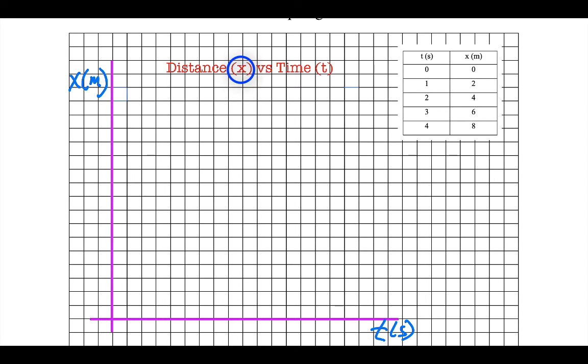Now, notice I have distance and, in parentheses, x, so that the reader knows that x is the symbol for distance on my graph. Time, parentheses, t. So, again, the reader knows that time is what the symbol is on the x-axis. Very important. Always label your graph, title, the y-axis versus the x-axis.